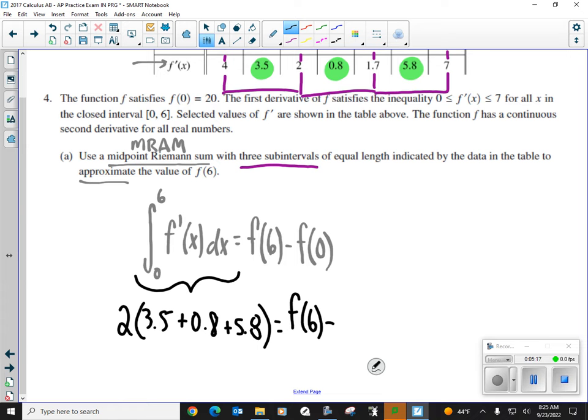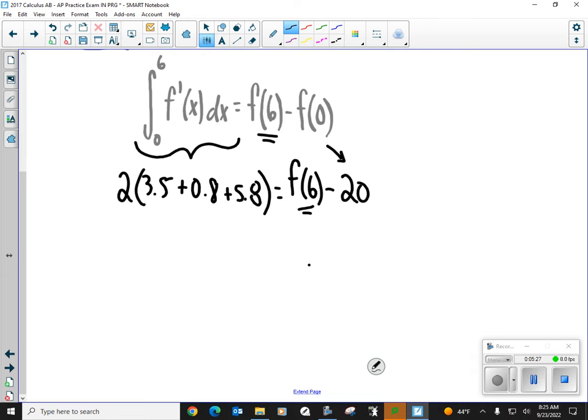Okay, I take that sum and I multiply it by my width or my height of two, depending on what you want to call it. We need to find out what f of six is. That's what we're solving for. So we should have f of zero. Okay, if I'm solving for something, I should have one unknown. This I should know. It's given to me in the problem. f of zero is 20. Woohoo! Nice! Now this is really easy. It's almost like an algebra one problem.